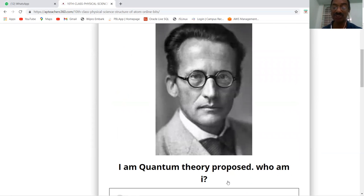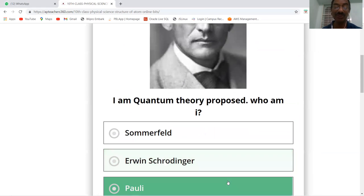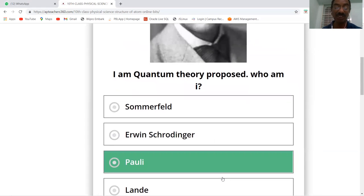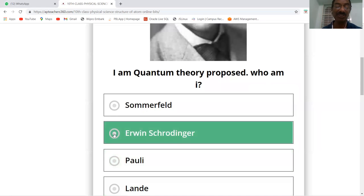I am quantum theory proposed, who am I? Among Sommerfeld, Schrodinger, Pauli, and Lande, the answer is Pauli, who proposed the quantum theory.